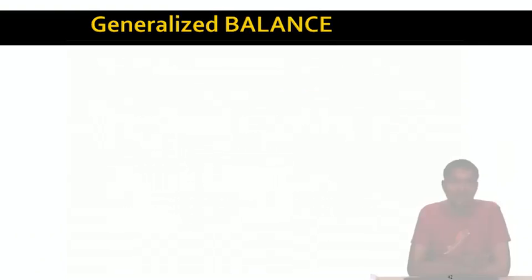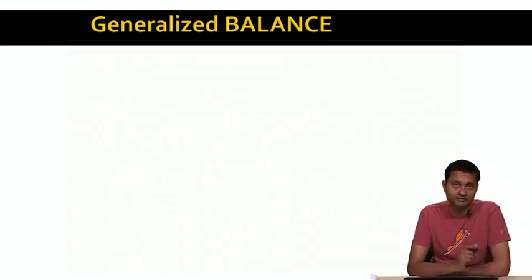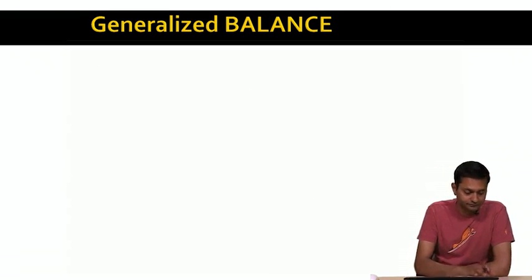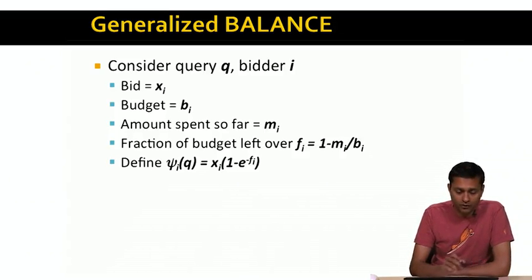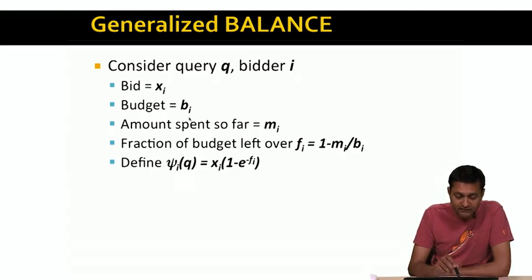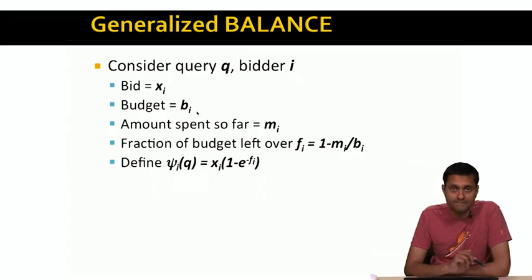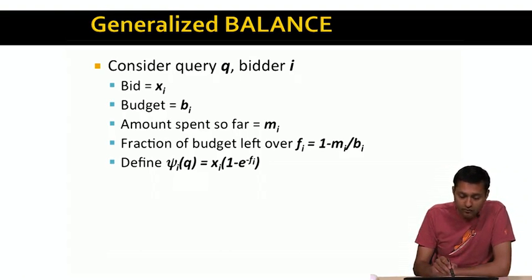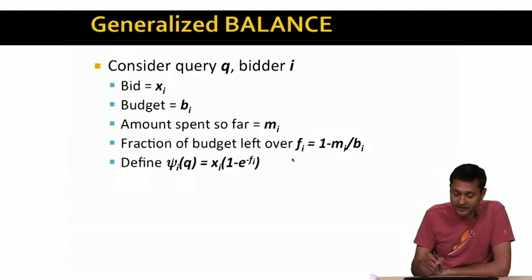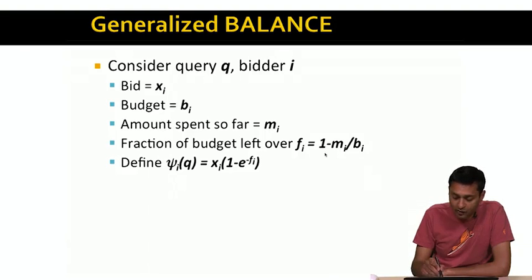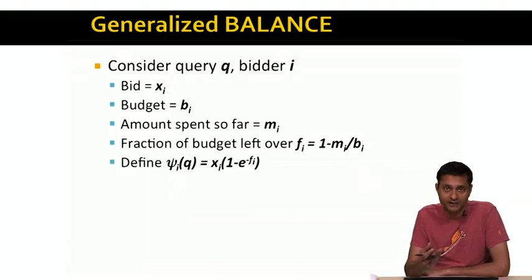We can fix the balance algorithm to handle different budgets and bids — this is called the generalized balance algorithm. For query Q and bidder i, let x_i be the bid, b_i be the budget, and m_i be the amount spent so far. The fraction of budget remaining is f_i equals 1 minus m_i / b_i.